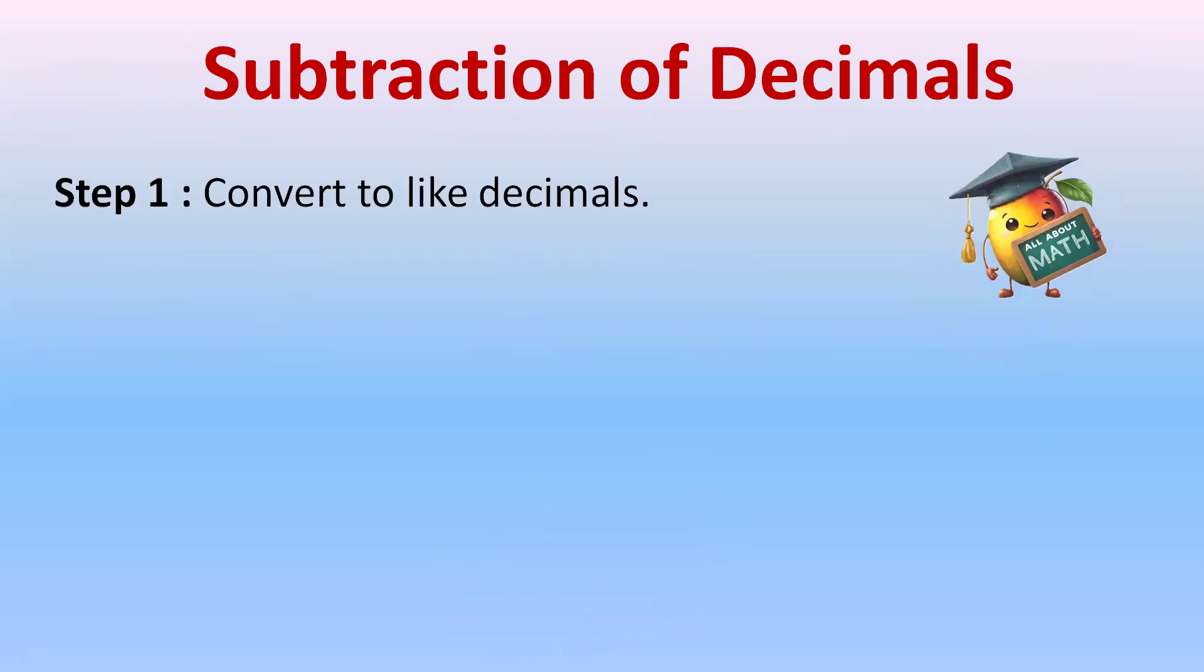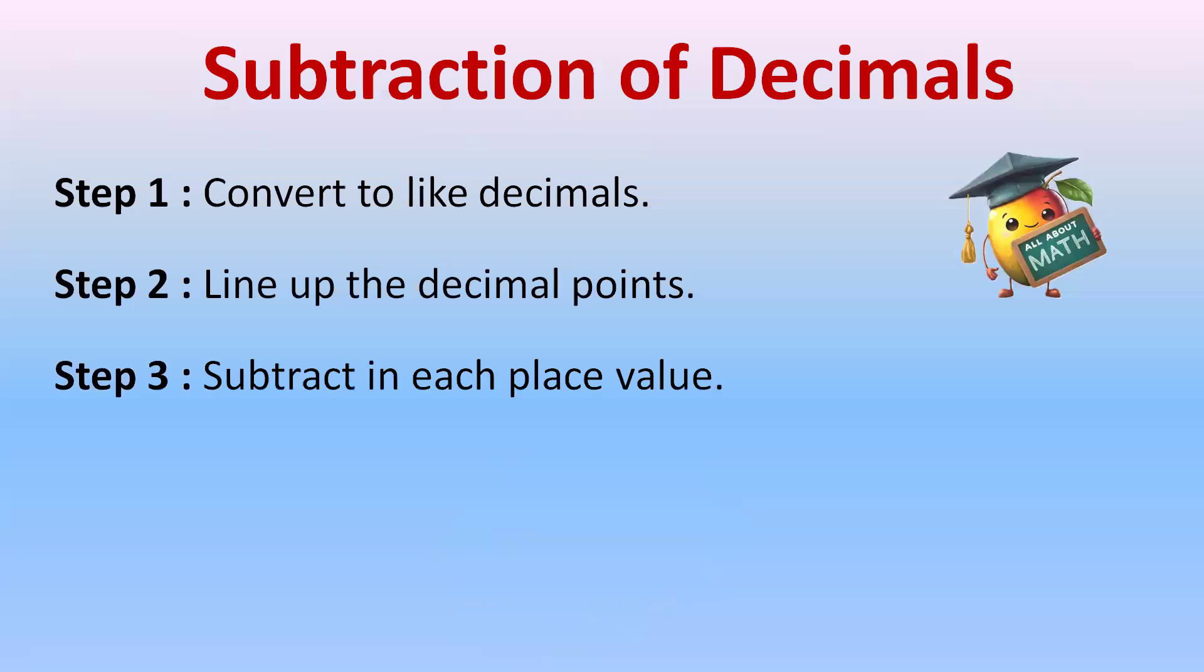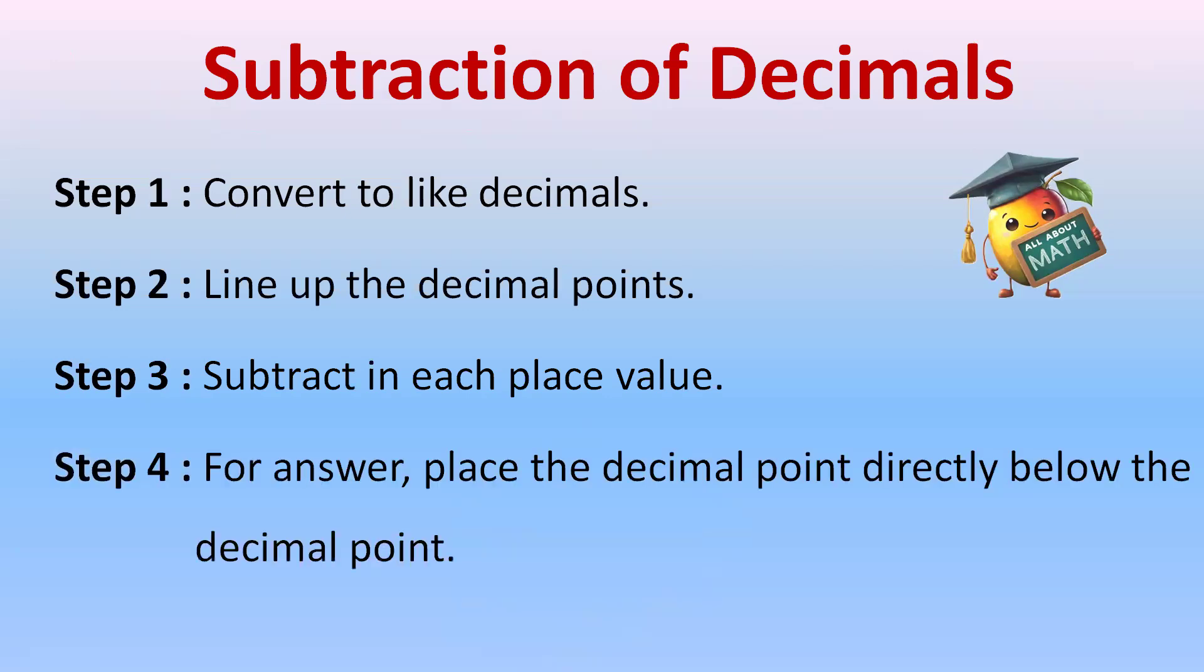We'll convert the given decimal numbers into like decimals. Step 2 will line up the decimal points one after the other, and step 3 will subtract each place value from the right side. Step 4, for answer, place the decimal point directly below the decimal point.